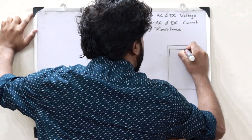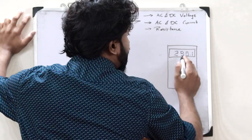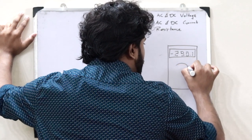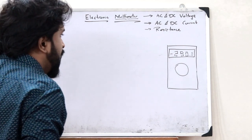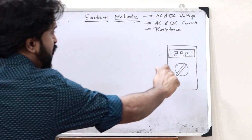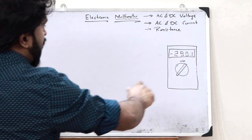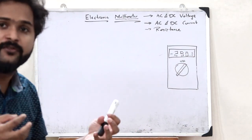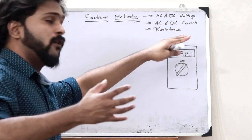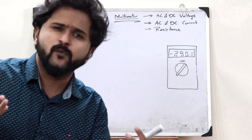A digital multimeter has an LCD display that can display four digits along with a sign. There will also be a rotary knob which we can turn. The off position is one setting, and this knob is turned to select what quantity we need to measure — whether we measure the AC voltage, DC voltage, AC current, DC current, or the resistance.